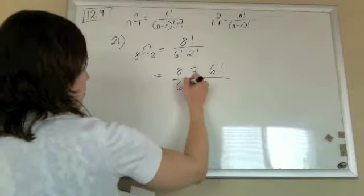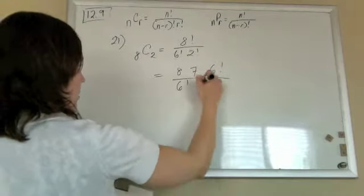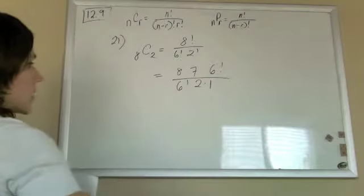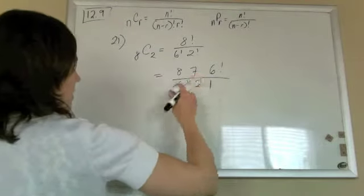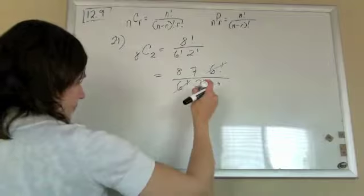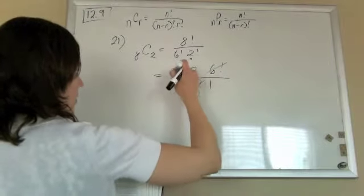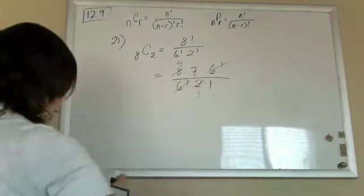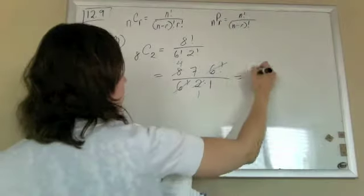So 8 factorial over 6 factorial times 2 factorial. So 8 times 7. Let the 6 factorial cancel with the 6 factorial on the bottom. 2 times 1. 6 factorials cancel. Divide by 2, I get 1. Divide by 2, I get 4. So 28.